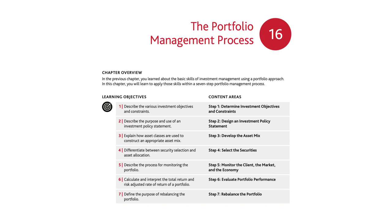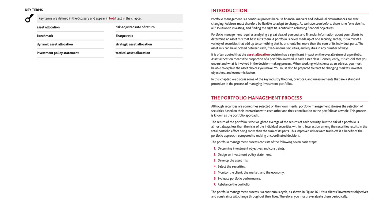The main content areas are: Step 1 - Determine Investment Objectives and Constraints; Step 2 - Design an Investment Policy Statement; Step 3 - Develop the Asset Mix; Step 4 - Select the Securities; Step 5 - Monitor the Client, the Market and the Economy; Step 6 - Evaluate Portfolio Performance; Step 7 - Rebalance the Portfolio.